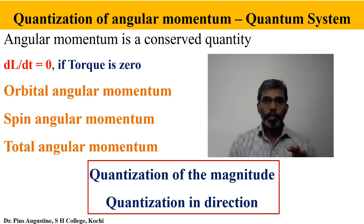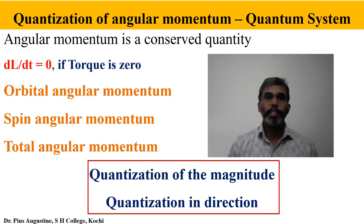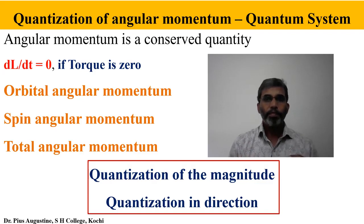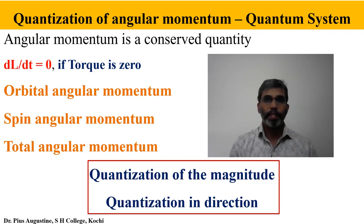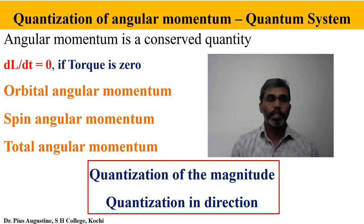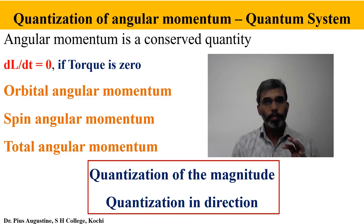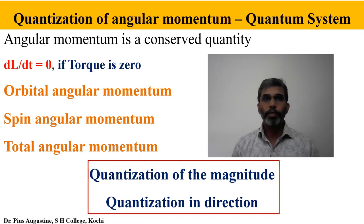Angular momentum is one of the very important physical quantities and it plays a significant role in physics. We know that angular momentum is a conserved quantity — as the system evolves, angular momentum will remain constant, provided there is no external torque acting on the system. The discussion of angular momentum is equally important in classical as well as quantum systems.